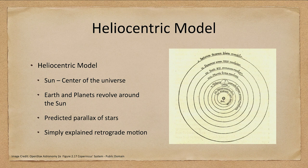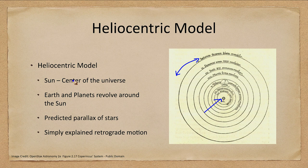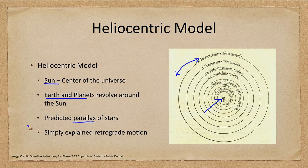His model placed the sun at the center, with Mercury, Venus, Earth and Moon, Mars, Jupiter, Saturn, and then the great sphere of stars around the outside. The Earth and planets orbit around the sun. Now this does make a prediction: it predicts that stars will have parallax.